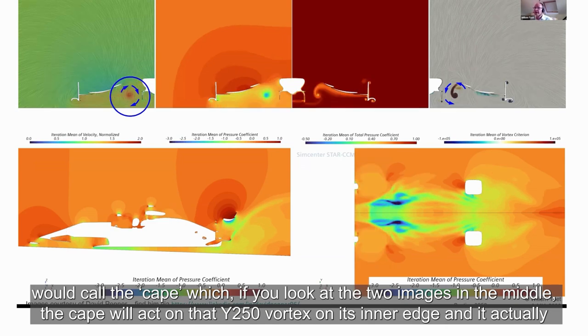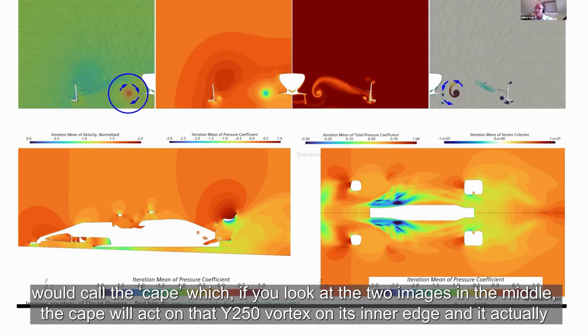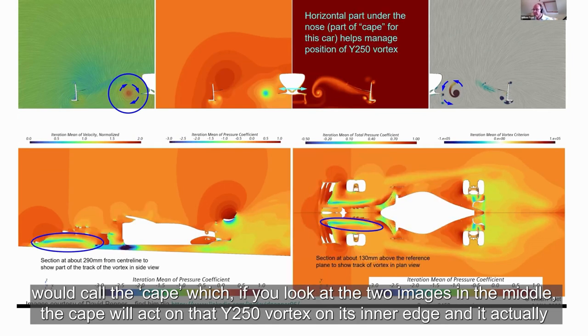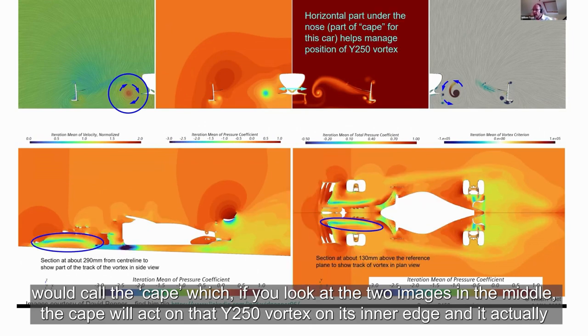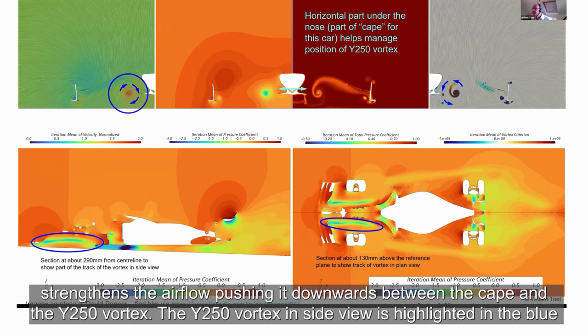The Cape, if you look at the two images in the middle, will act on that Y250 Vortex on its inner edge and it actually strengthens the airflow, pushing air downwards between the Cape and the Y250 Vortex.